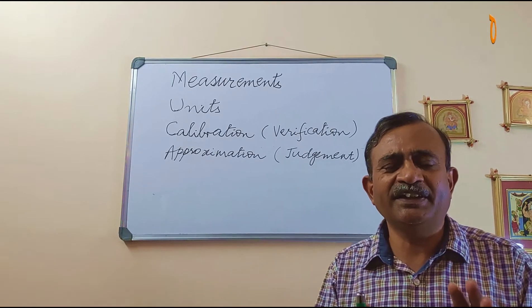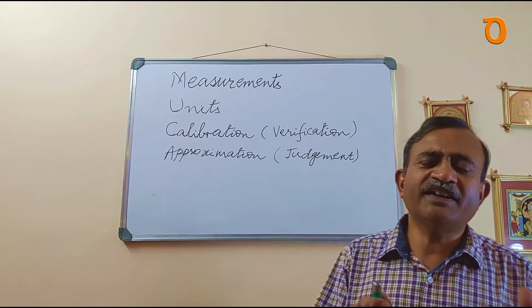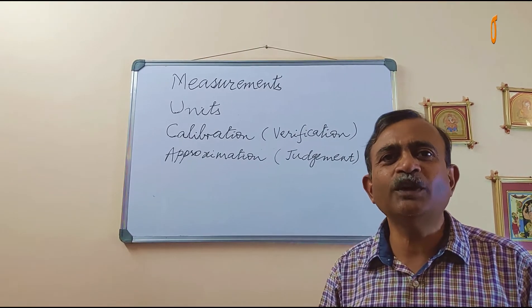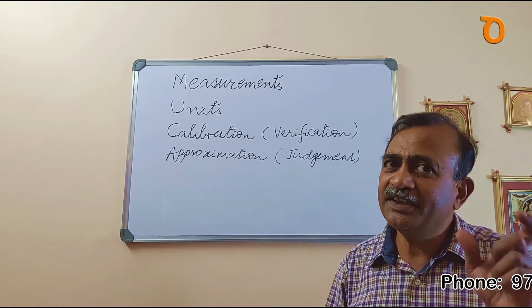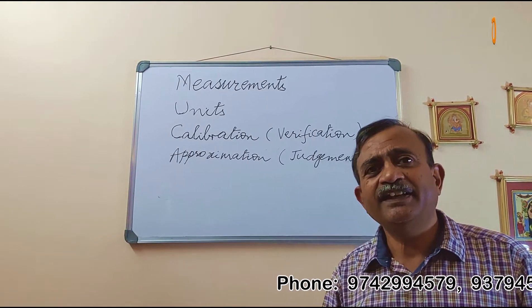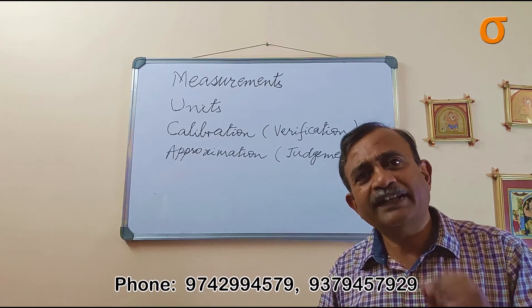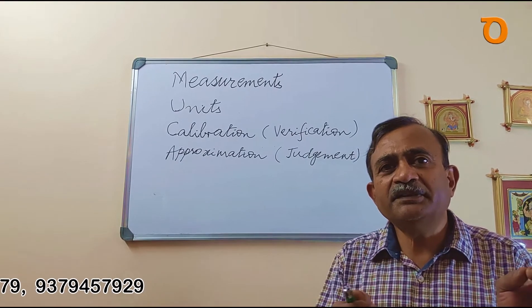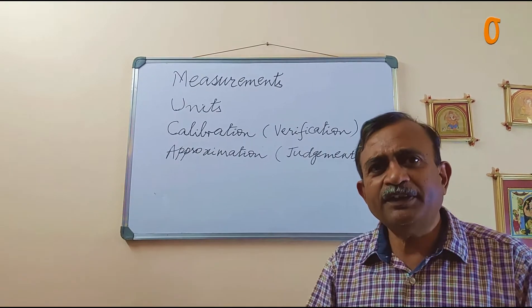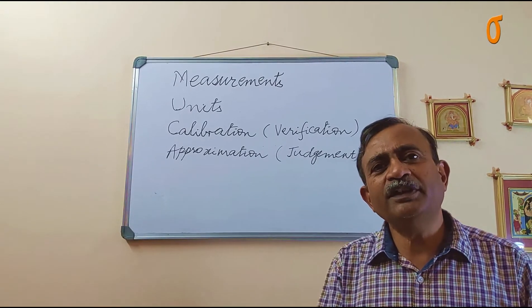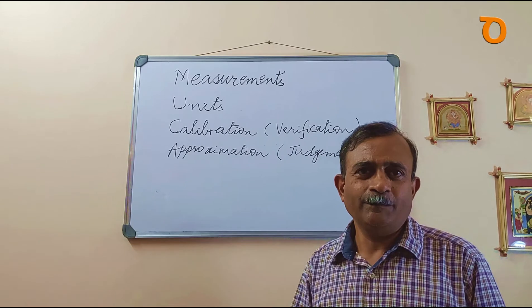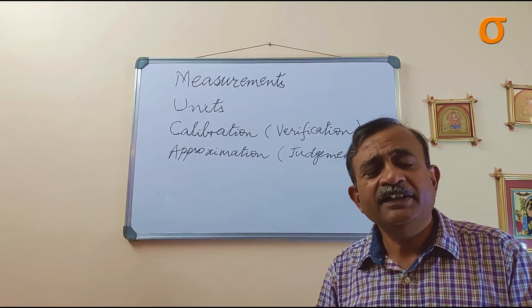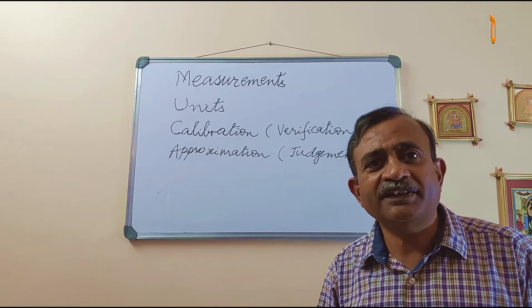Similarly, when the body temperature is taken we say 98.4 degrees Fahrenheit. There is one thing you will observe is common here, that the figures which we are using are either in 1, 2, or maximum 3 digits. When I say the distance between Bangalore and Delhi is 2200 km we are measuring in terms of kilometers, whereas when I say the length of a cricket pitch is 22 yards.